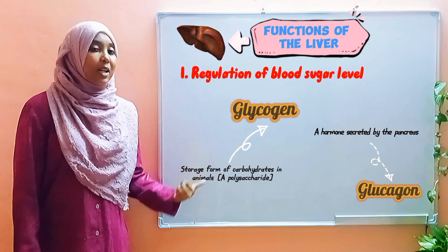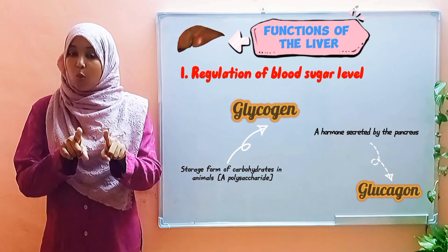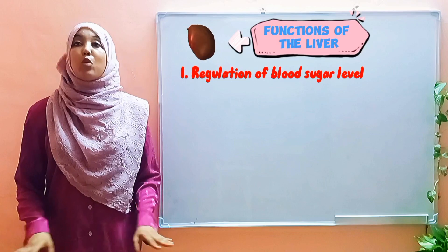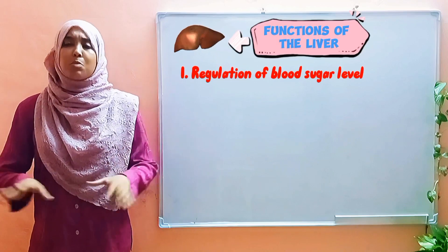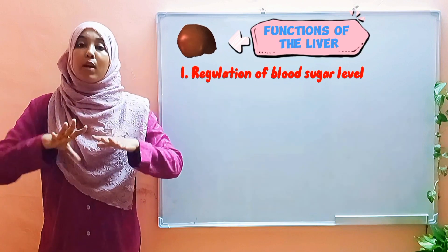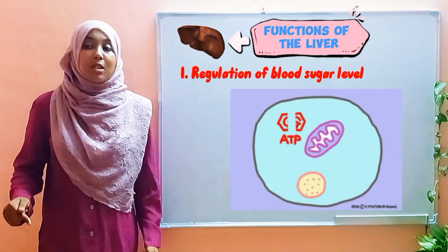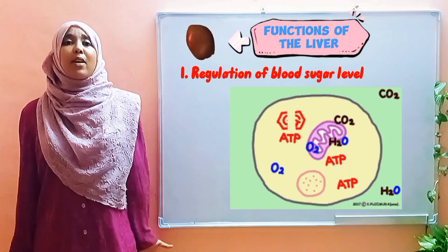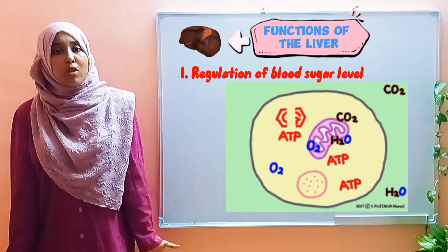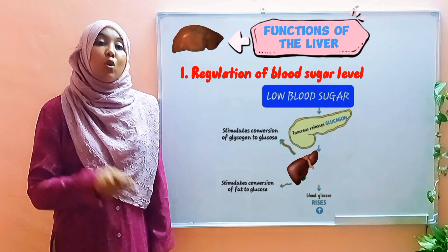Imagine a scenario where you haven't eaten for hours — maybe you're fasting. There has been no intake of food for quite some time. Your cells still require energy because they need to survive. So where are you supposed to get this energy from when you're not taking in any food? This is where glucagon comes in.